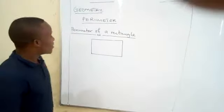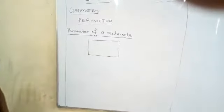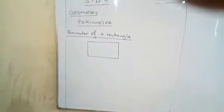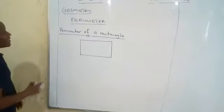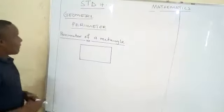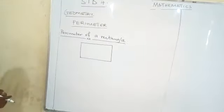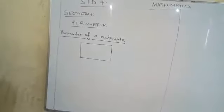Hello everyone. Welcome again in Mathematics Level. Today we are going to learn perimeters — perimeters of a rectangle.